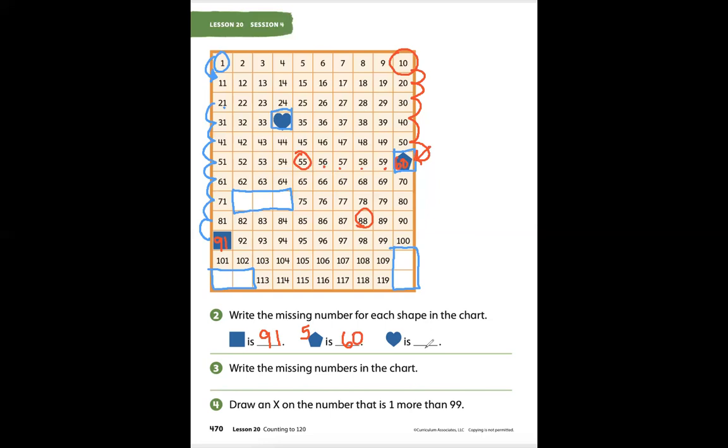And the next shape is a 2D shape and it has one point at the end. So the heart is up here. Let's start at 31. 31, 32, 33, 34.